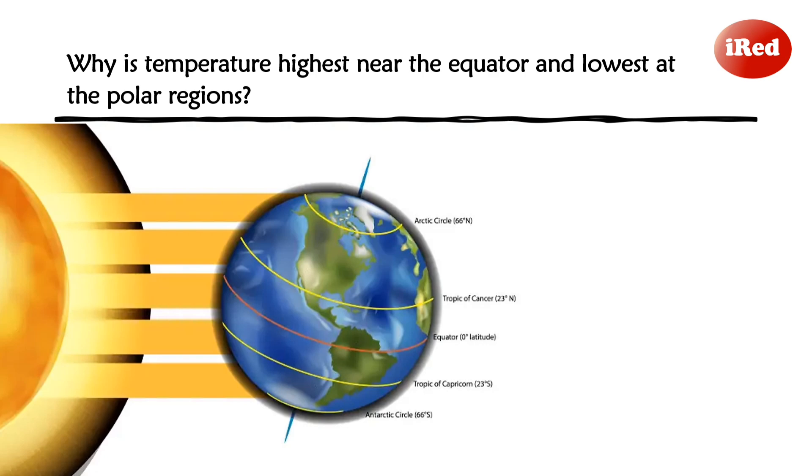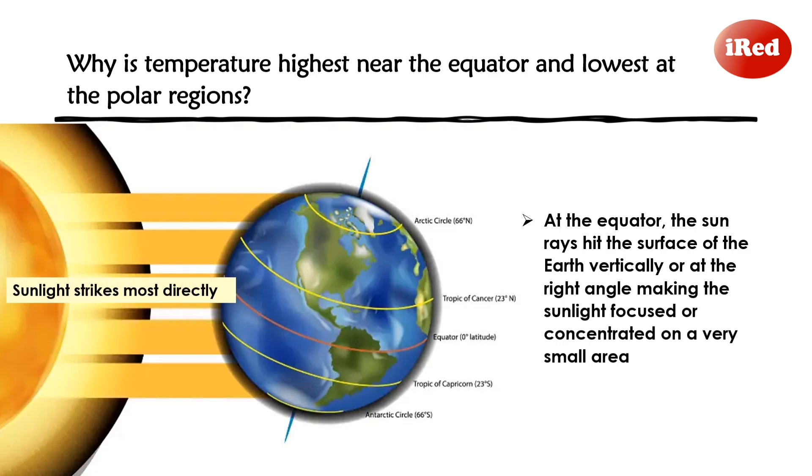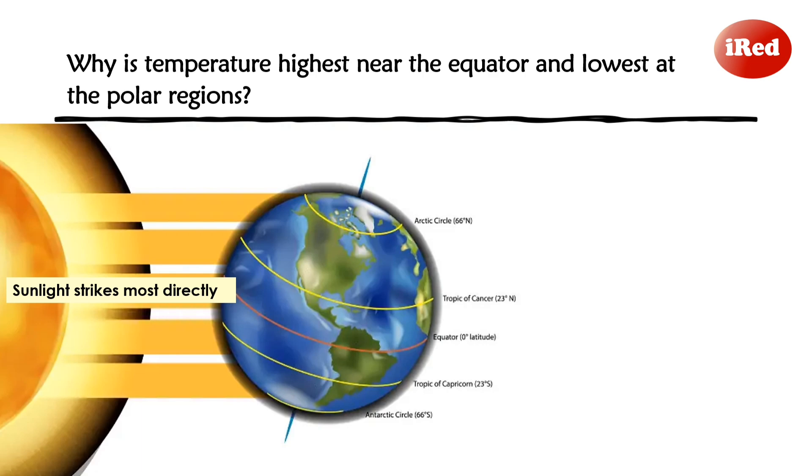At the equator, the sun rays hit the surface of the Earth vertically or at the right angle, making the sunlight focused or concentrated on a very small area. Thus, the equator receives the most of the sun rays, making the equator hot.